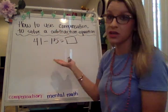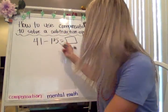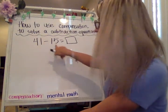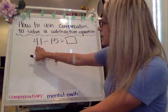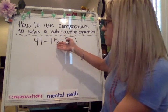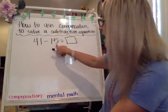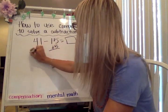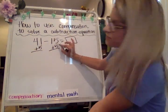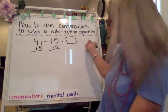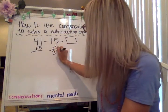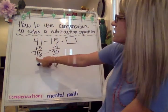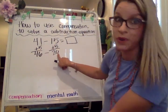41 minus 15 — we can use compensation because there's regrouping. We are adding to the second number. I wouldn't want to add nine because that wouldn't make this simpler. We want to do whatever partners up with it, so five partners with five to get to the next 10. So we're going to turn 15 into 20, and we've got 46. Bringing down our subtraction sign, so 46 minus 20 is our new equation.